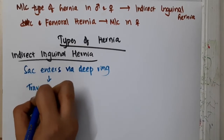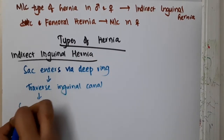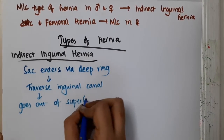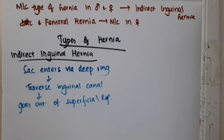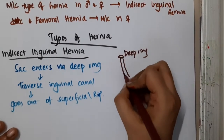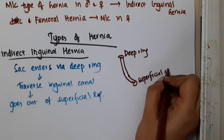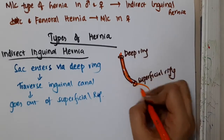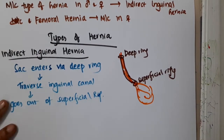It goes through the inguinal canal and it will come out of the superficial ring. So this indirect inguinal hernia will actually start from the deep ring, go through the inguinal canal, and then it will come out of the superficial ring. The herniated sac comes out here — this is indirect inguinal hernia.